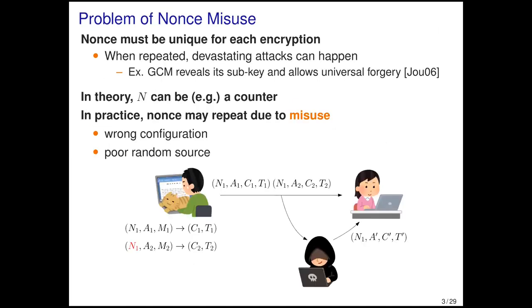For nonce-based AE, the nonce must be unique for each encryption. When it is repeated, a devastating attack can happen. A well-known example is GCM — even one repetition of the nonce in GCM allows the adversary to recover its sub-key and subsequently perform a universal forgery. In theory, the solution is easy by using, say, a counter or random value of sufficient length. But in practice, nonces may repeat due to various reasons, such as wrong configuration or multiple random sources.